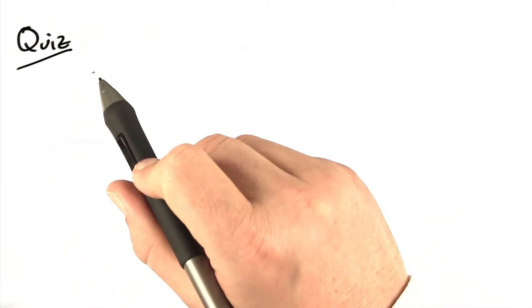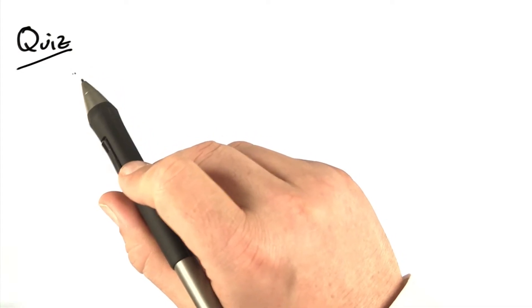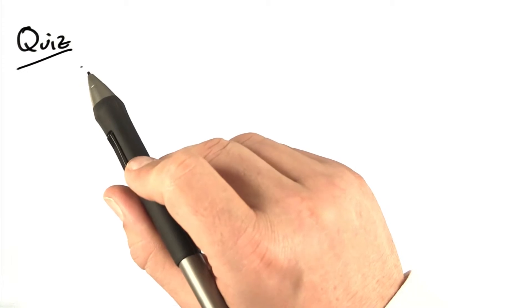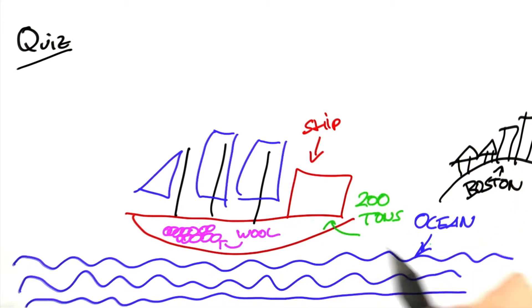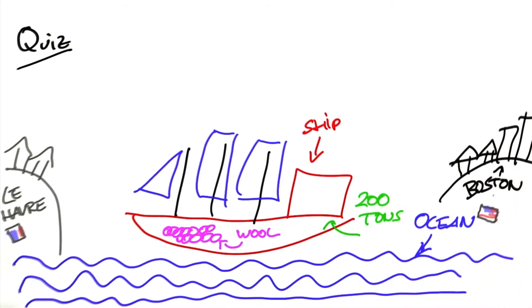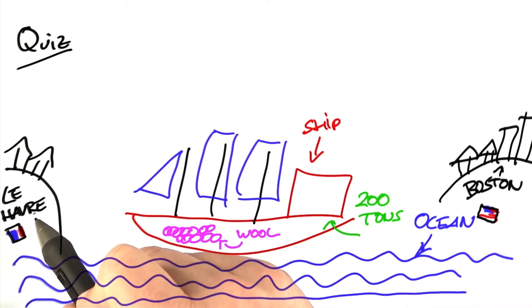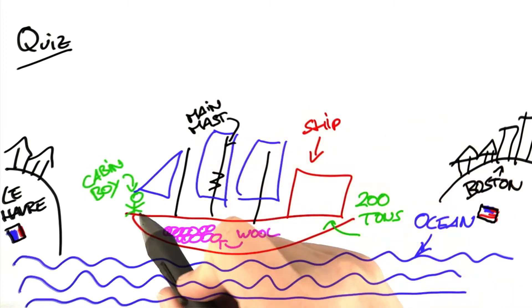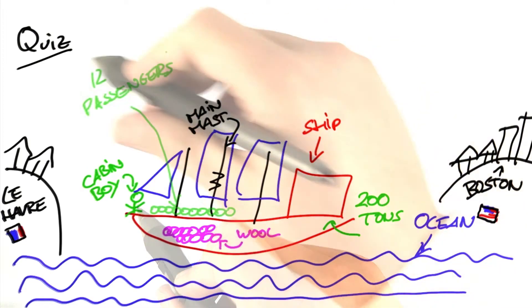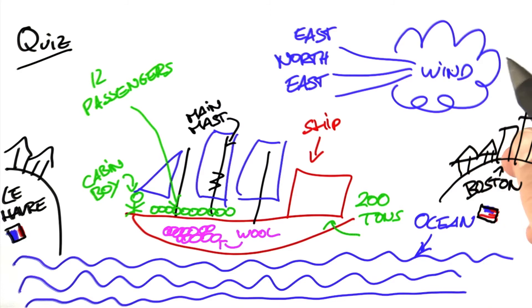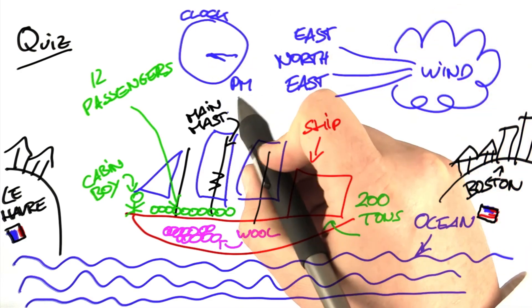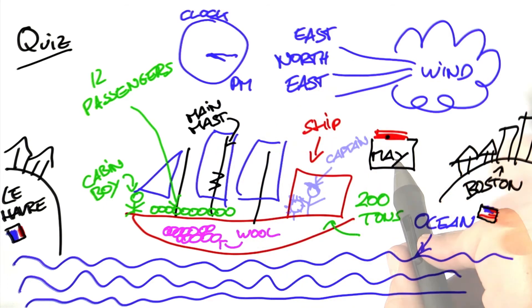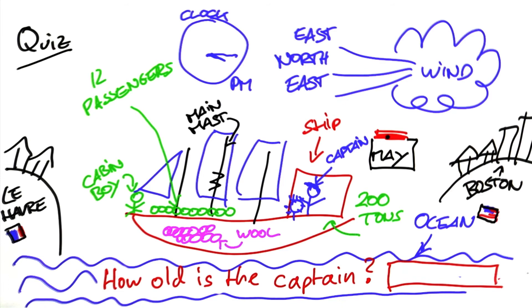To see whether you got all this, let's have a quiz. Namely, a word problem first stated by French novelist Gustave Flaubert in 1843. A ship sails the ocean. It left Boston with a cargo of wool. It grosses 200 tons. It is bound for the Havre in France. The main mast is broken. The cabin boy is on deck. There are 12 passengers aboard. The wind is blowing east-northeast. The clock points to a quarter past three in the afternoon. It is the month of May. Now for the question: How old is the captain?